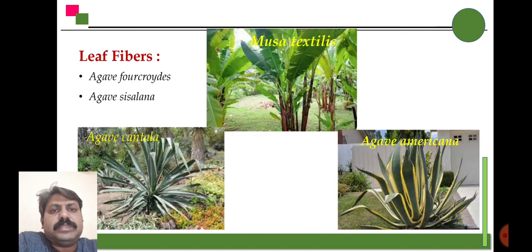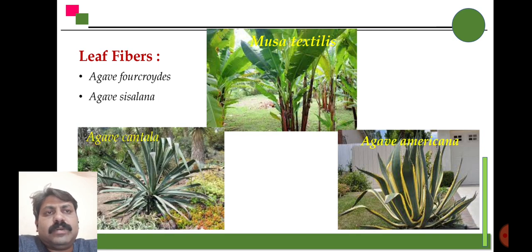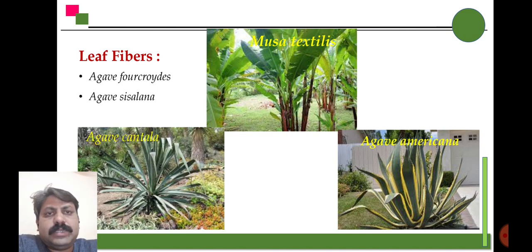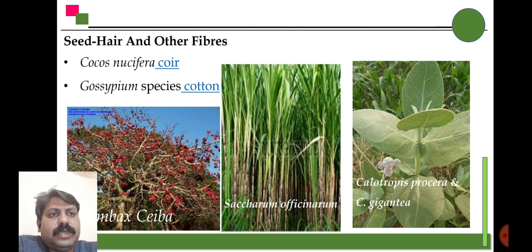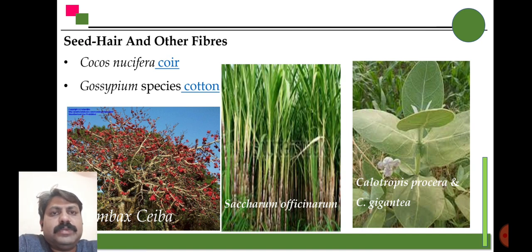There are also species from which fiber can be extracted from the leaves. The common species include Agave sisalana, Musa textilis, and Agave americana — we use the leaf fiber of these species as a source. Some more species are Bombax, Saccharum officinarum, Calotropis procera, and Calotropis gigantea. Saccharum officinarum — that is sugarcane — the bagasse of sugarcane is used as a source of fiber.